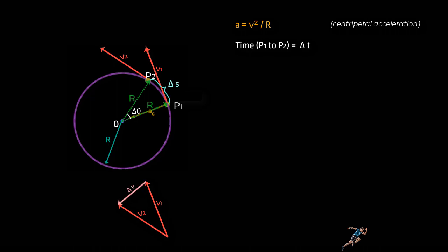Now, the change in angle delta theta is the same here and here because you see v1 is perpendicular to the line OP1 and v2 is perpendicular to line OP2. Hence, these two triangles are similar and therefore the ratios of corresponding sides should also be equal.